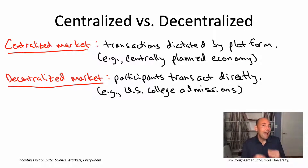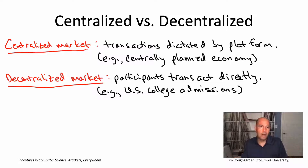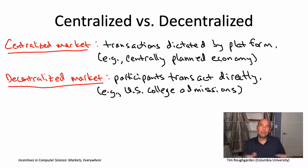It's not like college admissions is somehow fundamentally a decentralized activity — that's merely how the United States has chosen to implement it. In many countries, there's a national entrance exam, and based on that, maybe some preferences submitted by students and or colleges, a centralized algorithm will, in a single shot, figure out who gets to go where. You do not have direct transactions between applicants and colleges.